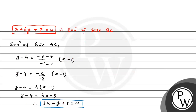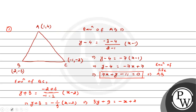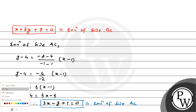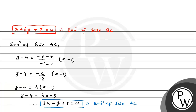Checking: for (1, 4): 3 minus 4 plus 1 equals 0. And for (-1, -2): -3 plus 2 plus 1 equals 0. Correct. Now let us go to the second part of the question.